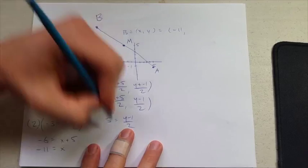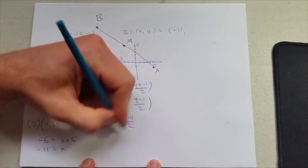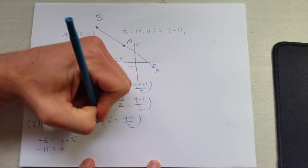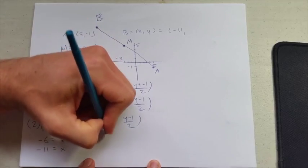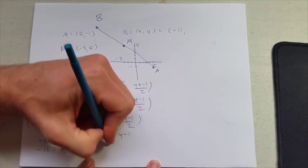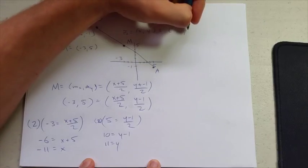Now over here, we can do the y coordinate. Same thing. Multiply both sides by 2: 10 equals y minus 1. Add 1 to both sides: 11 equals y.